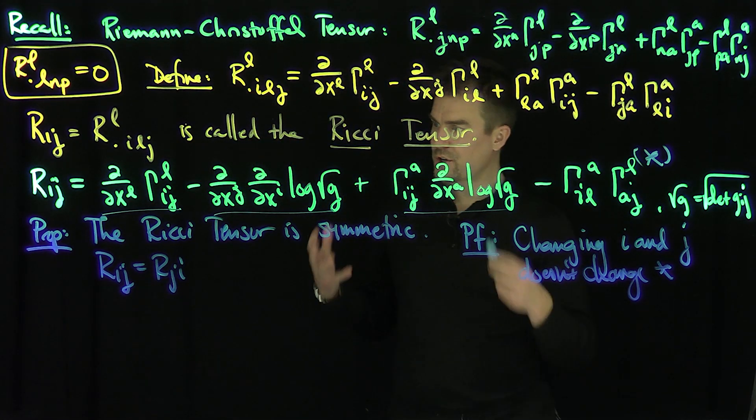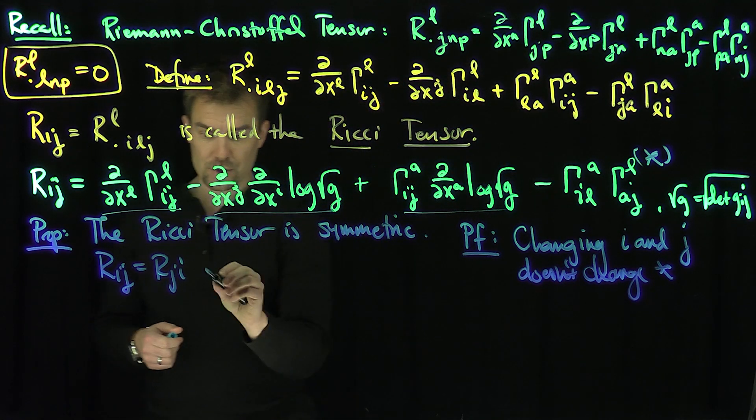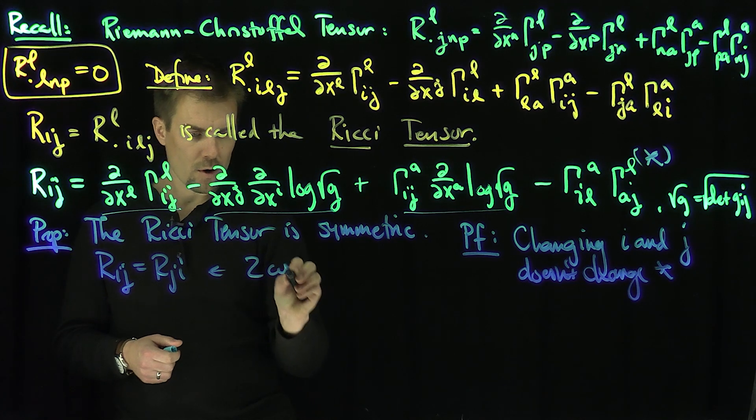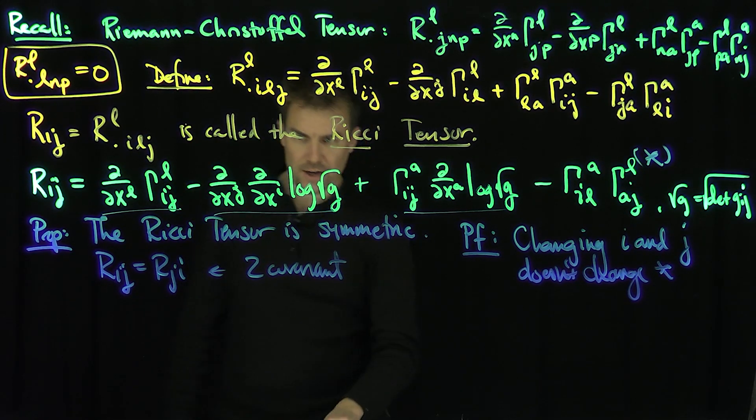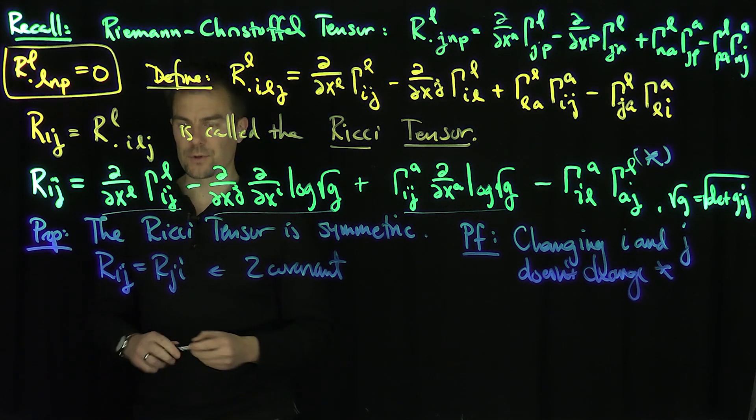Now we're in great shape. So I have this Ricci tensor, which is a two-covariant tensor. And what this Ricci tensor does is it gives me two other beautiful tensors.